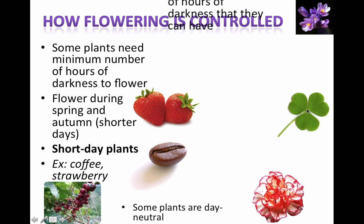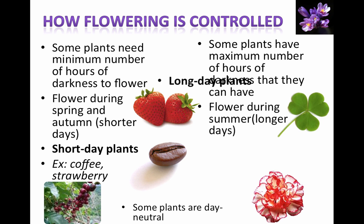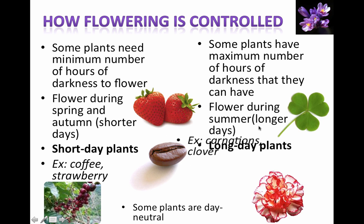On the other hand, some plants have a maximum number of hours of darkness that they can have. We need to keep the hours of darkness to a limit — if there's too much darkness, these plants will not actually flower. These plants are called long day plants, but long day plant actually means short night. They flower during the summer because the summer has longer days and relatively short nights. Carnations and clovers are examples here.